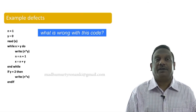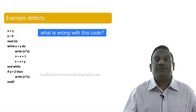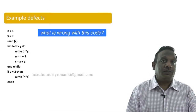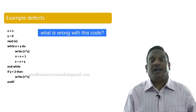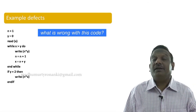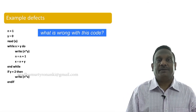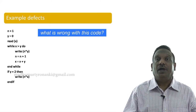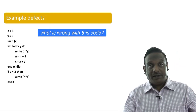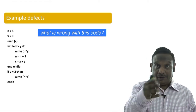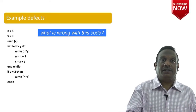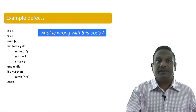Now let us look at some example defects. I have a piece of code on the screen. What is wrong with this code? Even if you have never written a program, these are simple logic. There are variables n, y, and x. n has been assigned 1, y is 0, and you are reading a value for x. While x is greater than y — that is a loop — while this condition is true, do the rest of the statements; once the condition is not true, come out of the loop.